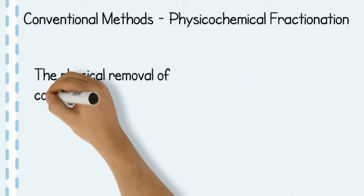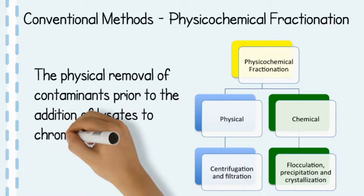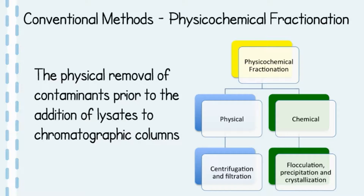Other conventionally used antibody purification methods involve the physiochemical fractionation of antibodies. This involves the physical removal of contaminants from lysates prior to loading onto chromatography columns. The methods can be either physical or chemically based, involving centrifugation and filtration, or flocculation, precipitation and crystallization, among others.